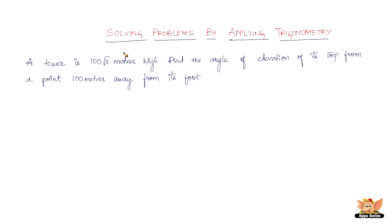In this video, let us solve problems by applying the concepts of trigonometry. The problem reads: a tower is 100√3 meters high — find the angle of elevation of its top from a point 100 meters away from its foot. This is a pretty simple and basic problem to start with.